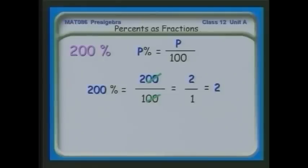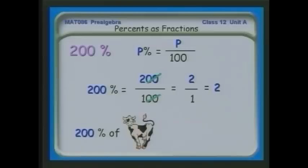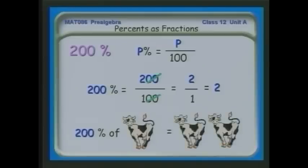If I have 200% of something — for example, what's 200% of a cow? That's two cows. You can have percentages that are greater than 100%: more than the whole thing. 200% means you have double what you had before.